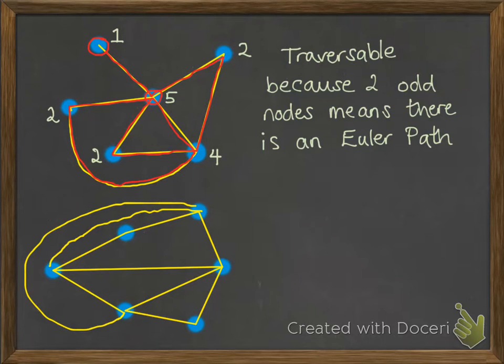Next example. Here's our network. Let's start labelling up the degrees of each of the nodes. You can see that all of them are an even degree node.